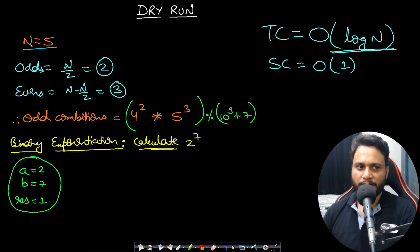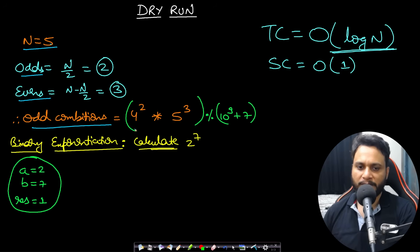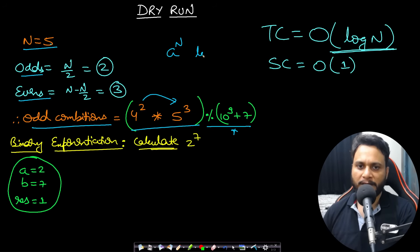So the solution is: take n, calculate the odd position count as n/2 and even position count as n minus n/2. The total combinations are 4^(n/2) multiplied by 5^(n - n/2). Always take the result modulo 10^9 + 7. You can compute a to the power n in O(log n) time using binary exponentiation.